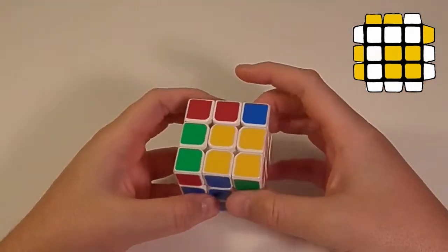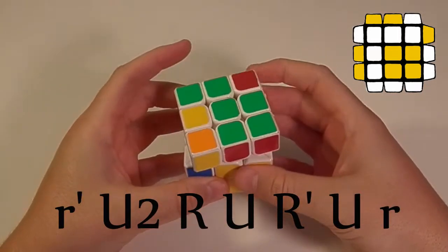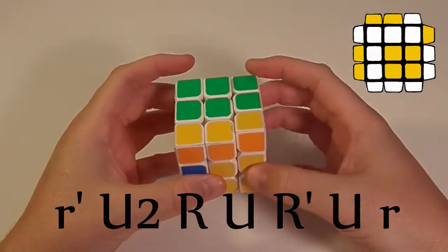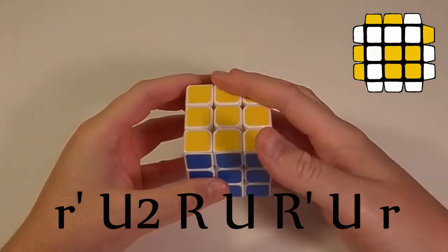And here's how you execute this case. You do a small r prime, u2, r, u, r prime, u, small r. And that will orient your layer.